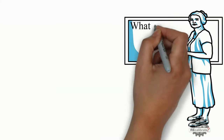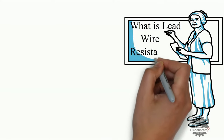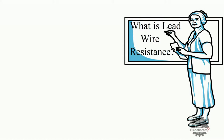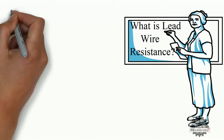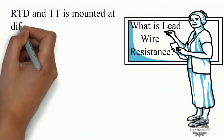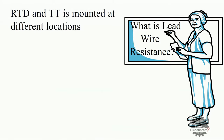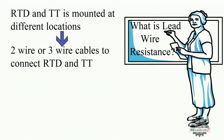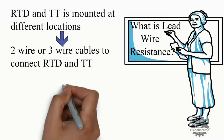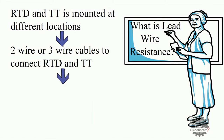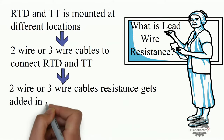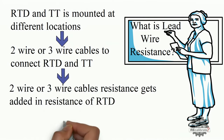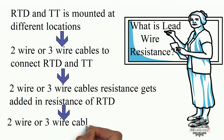Let's learn what is lead wire resistance in 2-wire RTD. As we know, in practical applications, RTD and temperature transmitter are mounted at different locations. So we use 2-wire or 3-wire cables to connect RTD and temperature transmitter. These cables have their own resistance, which gets added to the resistance of the RTD. This cable resistance is known as lead wire resistance.